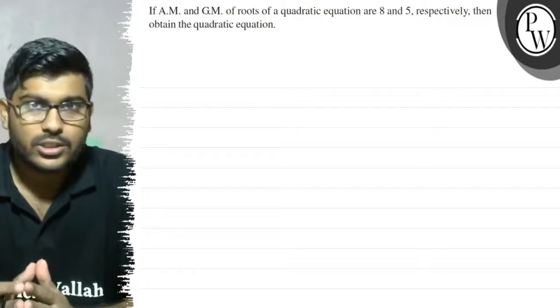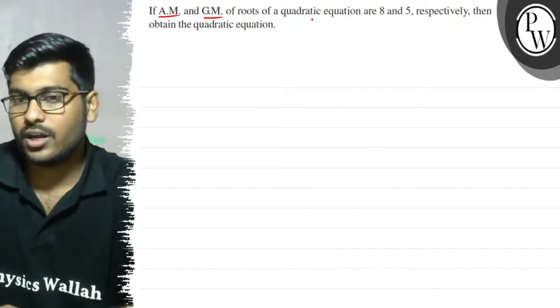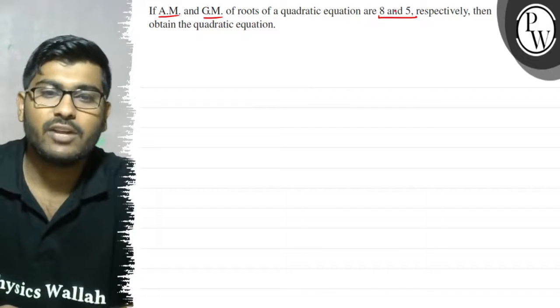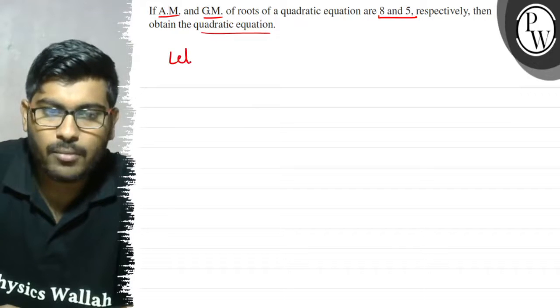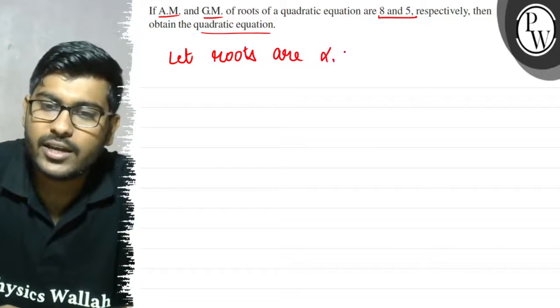So let's see this question. The question says that if arithmetic mean and geometric mean of roots of a quadratic equation are 8 and 5 respectively, then obtain the quadratic equation. So here we know that alpha and beta...